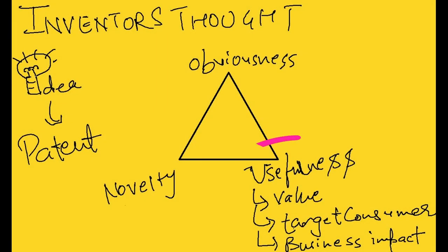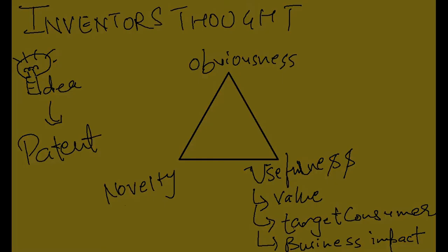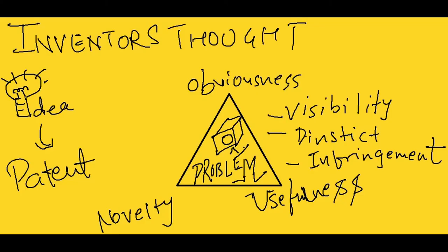The final key factor is idea usefulness, which deals with the profitability from the idea. Key markers to be observed are market value, target consumer and business impact. There are also other key points to remember.